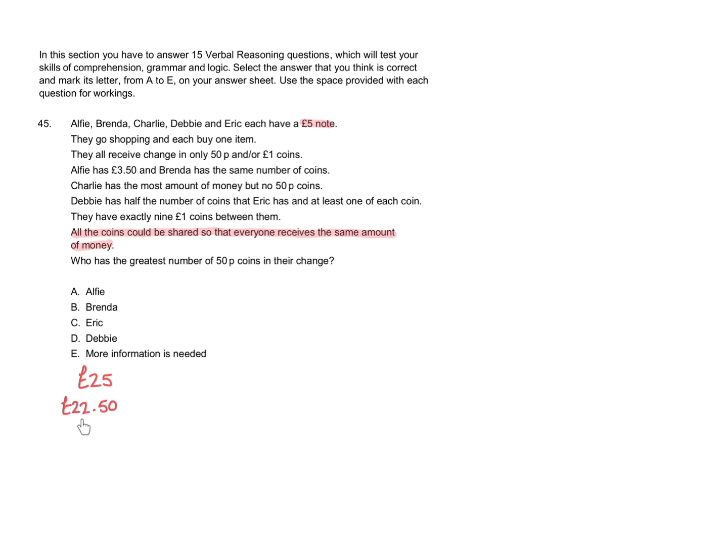This means that the highest total the group could have left would be £22.50. Remember we need to be able to share the amount of money which is left between five of them. The next lowest amount would be £20. This would mean they'd each receive £4. We could also have £17.50. I'm taking away groups of five 50p coins each time. They could also have £15. They could also have £12.50 or they could have £10. This is the lowest amount of money they could have because we know that they have exactly nine £1 coins between them.